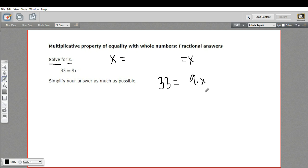What I want to do to get x alone is undo whatever is being done to it. Right now, what's being done to x is it's being multiplied by 9. So I want to do the opposite of multiplying by 9. And what's the opposite of multiplying by 9? It's dividing by 9.